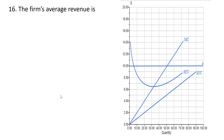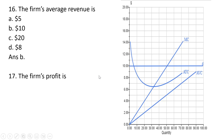Question 16: the firm's average revenue is just price, so it's $10. Answer choice B. The demand curve represents both marginal revenue and average revenue, all equal to $10. Question 17: the firm's profit—total revenue at 50 units is $500; total cost is average total cost times 50, or 7 times 50 equals $350. Total profit is $150. Alternatively, profit per unit is price minus ATC, which is $3, times 50 units equals $150. Answer choice A.